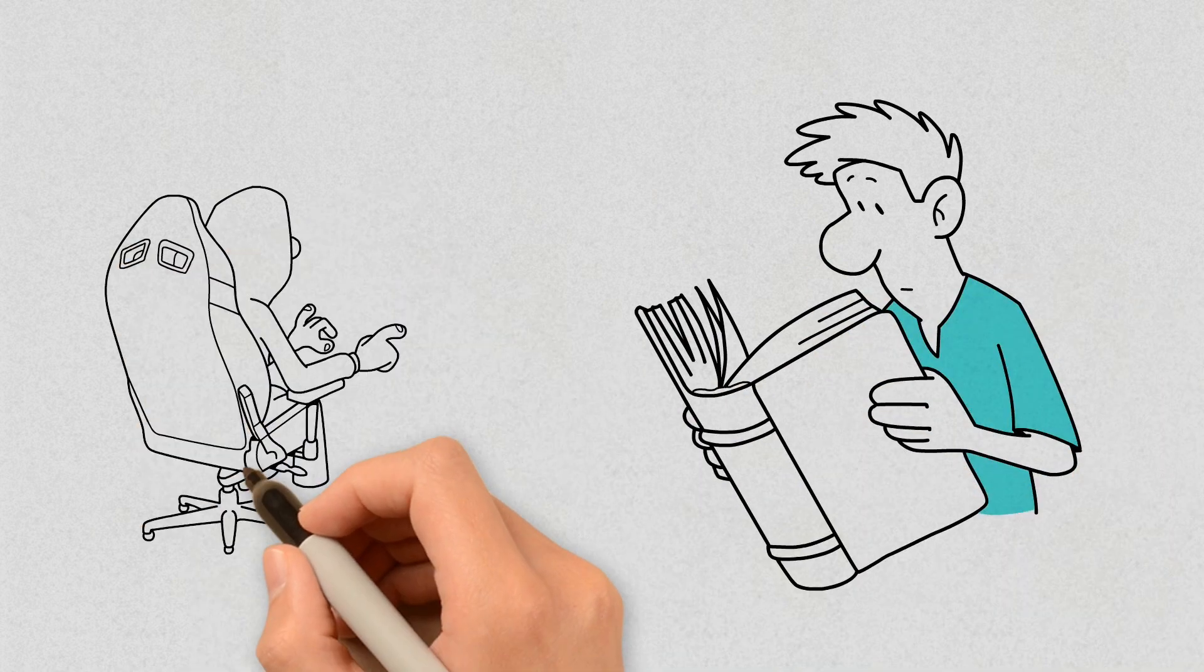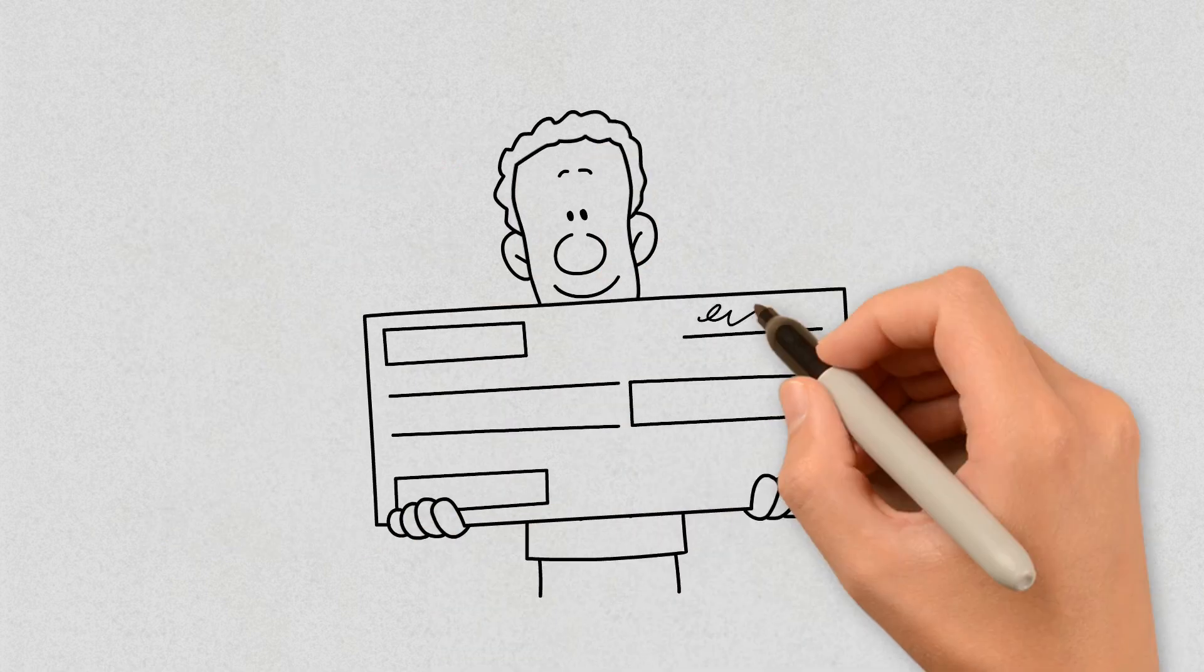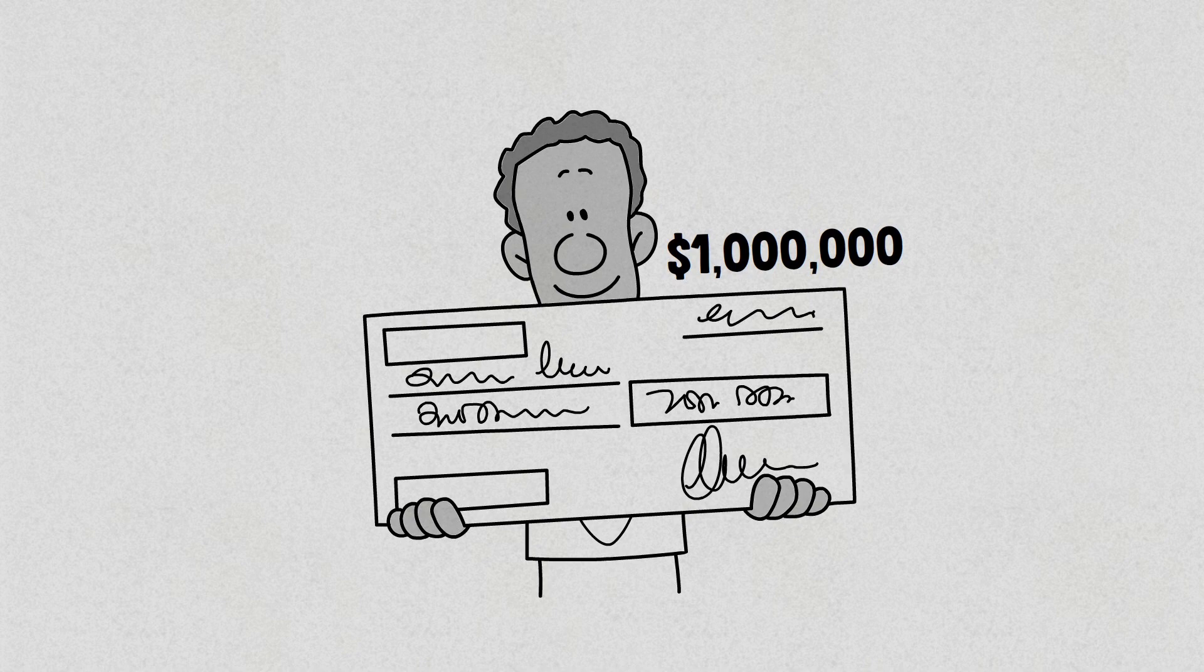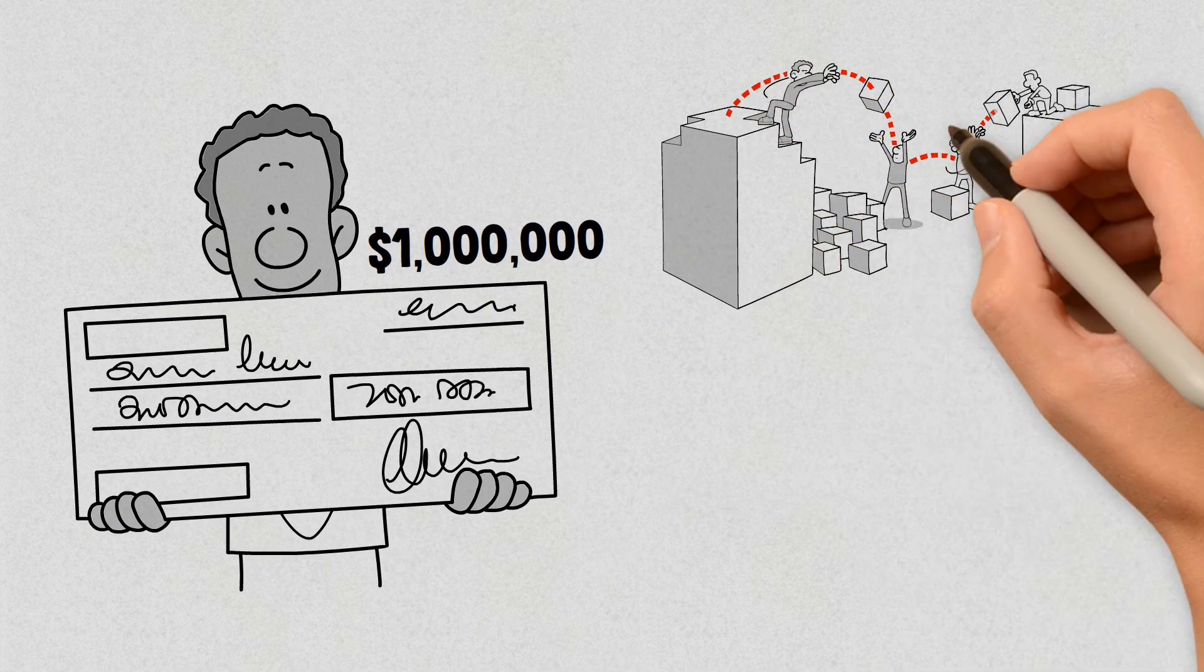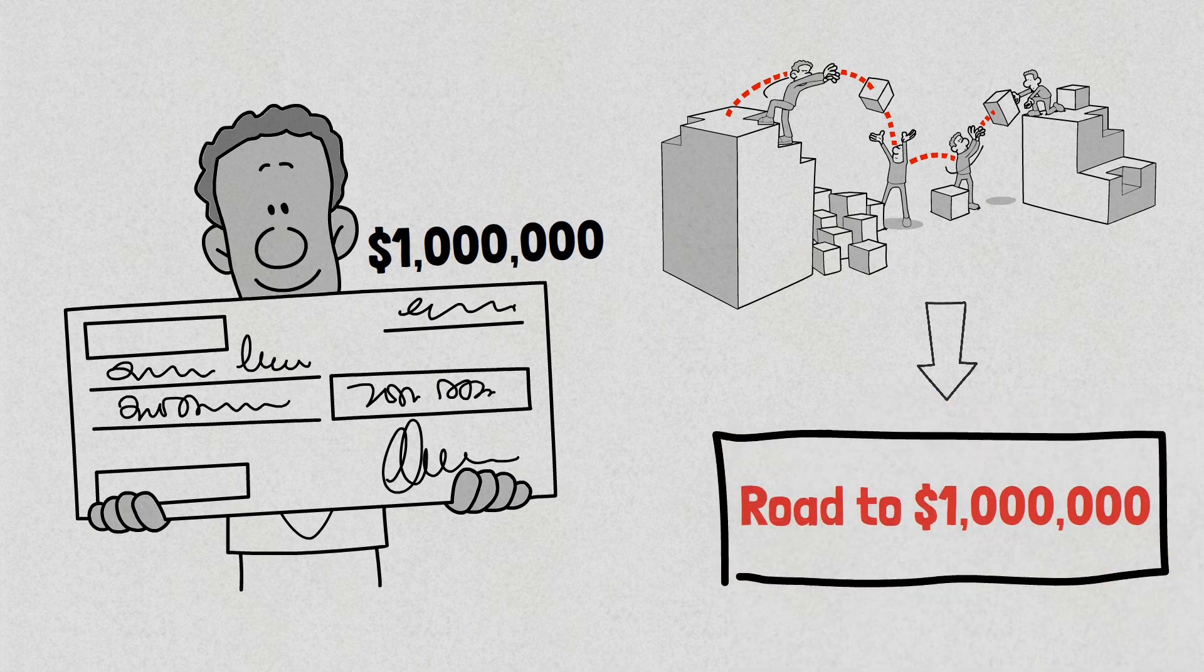I spent the whole night going through Quora and Reddit scanning through similar questions and the most commonly used approach people use to make their first one million dollars. To my surprise, most people had a very similar approach to making their first big money. In this video, I'll talk about the six most common ways rich people use on their road to millions.